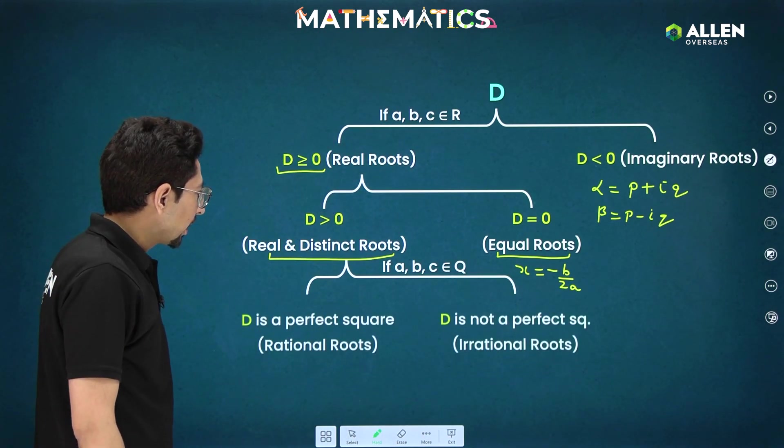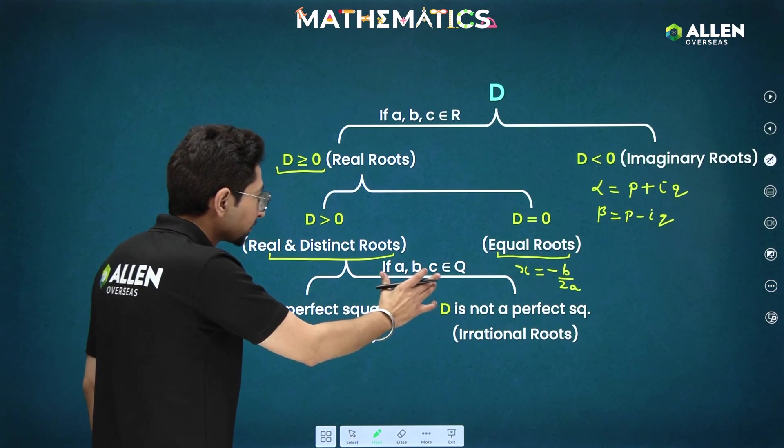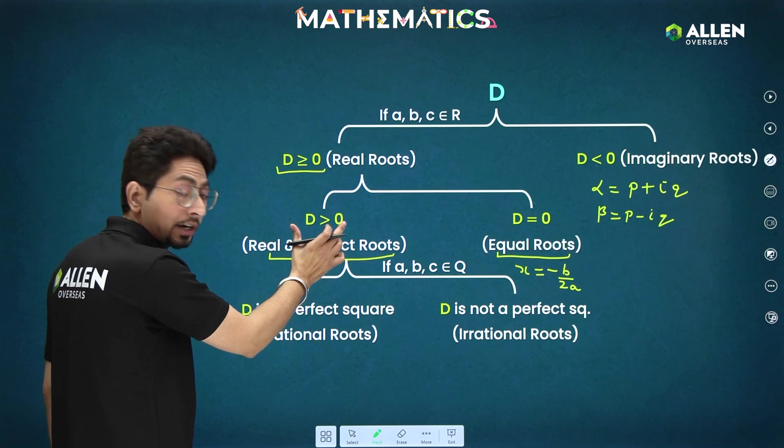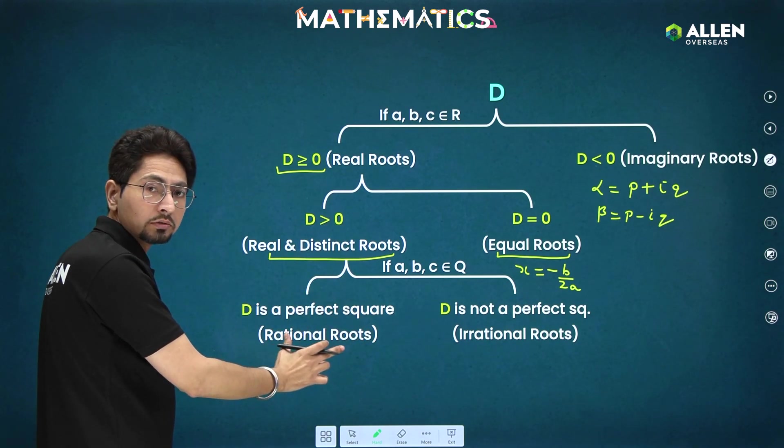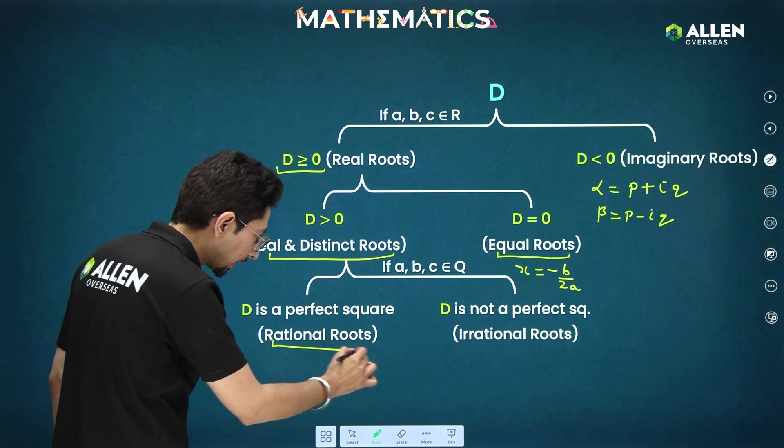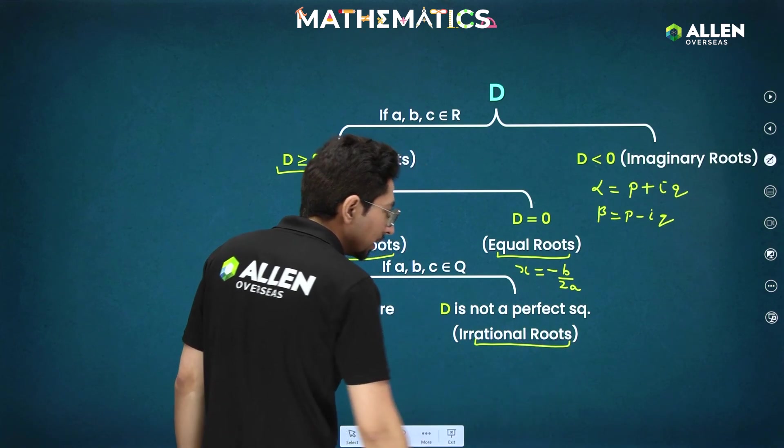Similarly, proceeding further, if a, b, c belong to rational numbers. If a, b, c belong to rational and D is positive, under this only we are proceeding. So if D is perfect square also, then your roots will be rational. And if it is not a perfect square, then clearly it will be irrational roots.